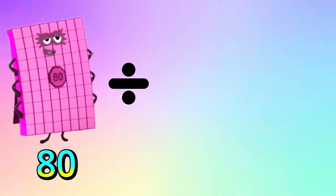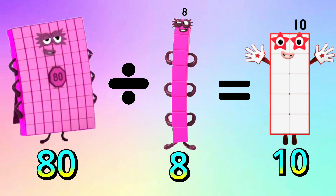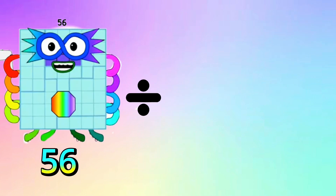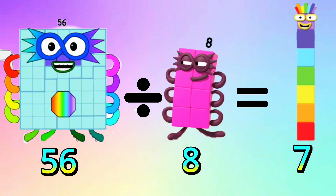80 divided by 8 is equals to 10. Can you repeat it with me? 80 divided by 8 is equals to 10. Next, 56 divided by 8 is equals to 7. And again, 56 divided by 8 is equals to 7.